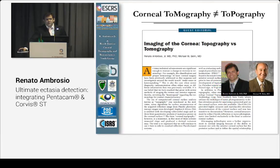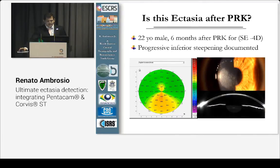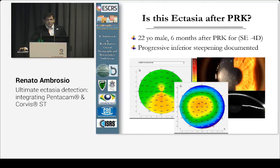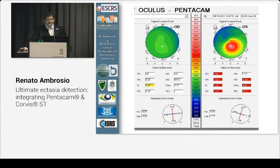We want to detect disease risk before disease occurs, so tomography is important. In an editorial with Dr. Belin, we acknowledged the difference between tomography and topography. This is a case that had progressive inferior steepening after PRK, and if you look at tomography data, you understand this is not ectasia because of the thickening. The combination of the thickness profile and elevation with the Belin-Ambrósio enhanced ectasia display gives you an objective D value, which is very important to detect disease in cases like that.